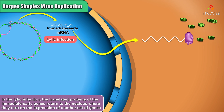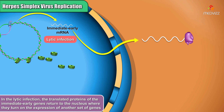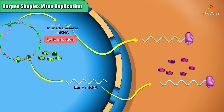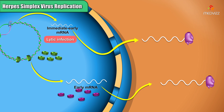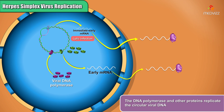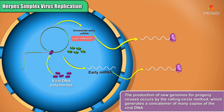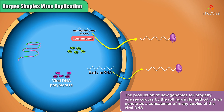In the lytic infection, the translated proteins of the immediate early genes return to the nucleus, where they turn on the expression of another set of genes called early genes. The mRNAs travel to the cytoplasm, where ribosomes translate them into proteins. These early proteins include a viral DNA polymerase. The DNA polymerase and other proteins replicate the circular viral DNA. The production of new genomes for progeny viruses occurs by the rolling circle method, which generates a concatamer of many copies of the viral DNA.